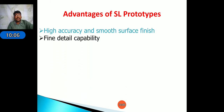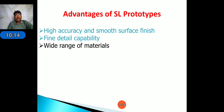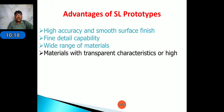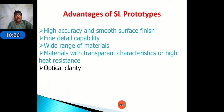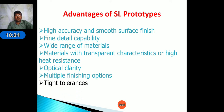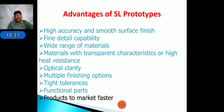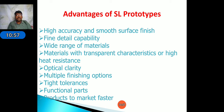The advantages of SLA prototyping include: higher accuracy and smooth surface finish compared to traditional methods; fine detail capability; wide range of materials with transparent characteristics and high heat resistance; optical clarity; multiple finishing operations; tight tolerances; functional parts production; and faster time-to-market. Based on these advantages, SLA is preferred for prototyping over traditional methods.